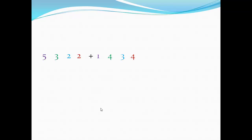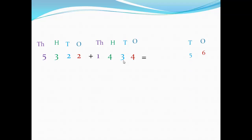Four digits plus four digits in the horizontal method: start from ones or units — the first number on the right. So two plus four equals six; two plus three equals five; three plus four equals seven; five plus one equals six.